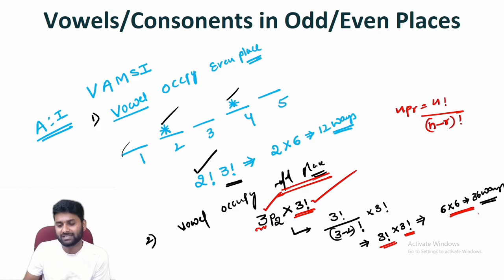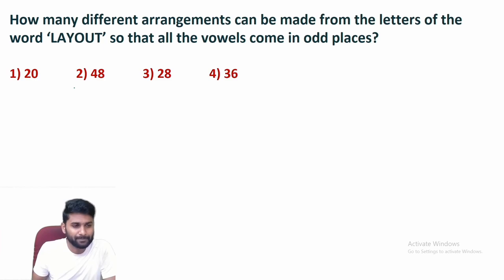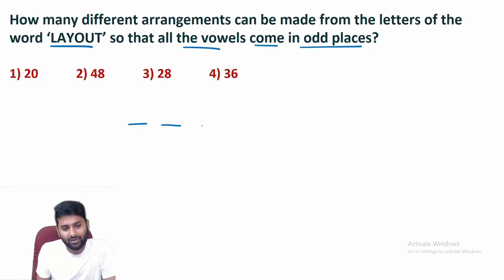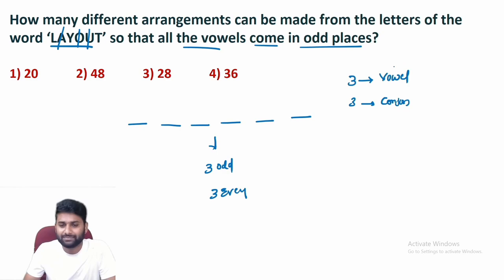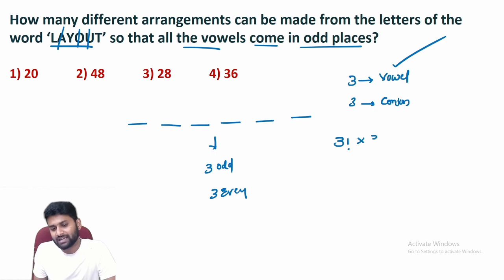Now let's see this question: how many different arrangements can be made from the letters of the word LAYOUT so that all vowels come in odd places? We have six positions — three odd places and three even places. In LAYOUT, there are three vowels and three consonants. Three vowels arranged in three odd places is 3! ways, and remaining three consonants in three even places is 3! ways. Total arrangements = 3! × 3! = 6 × 6 = 36.